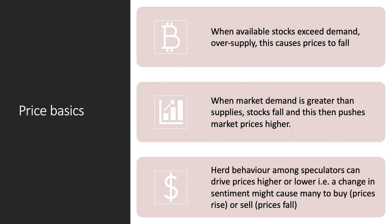A quick reminder of the basics: when the available stock of a product is greater than current demand, that leads to oversupply and prices tend to go down. However, when market demand is higher than available supplies, stocks or inventories go down and this pushes market prices upwards. Often in commodity markets, the herd behavior of speculators can drive prices higher or lower — a change in sentiment can cause many to buy, pushing prices up, or sell, causing prices to fall.